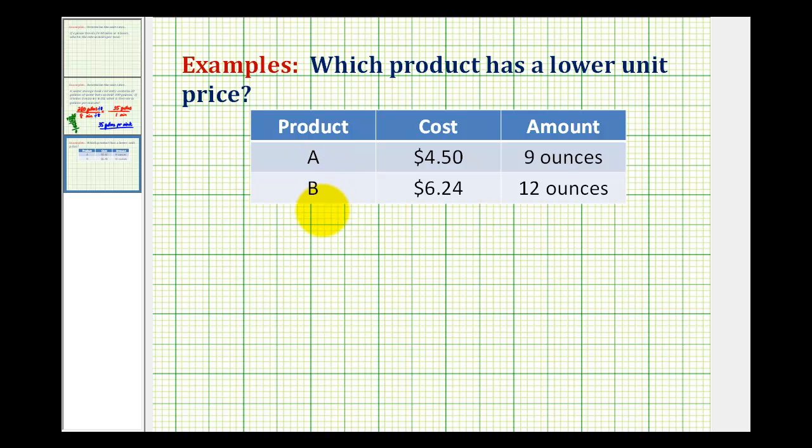If you go to the store and compare the same product from different manufacturers, it's sometimes difficult to determine the best buy because different manufacturers put different amounts of their product in their containers. But we can use the unit rate or the cost per unit to determine which product is the better buy.